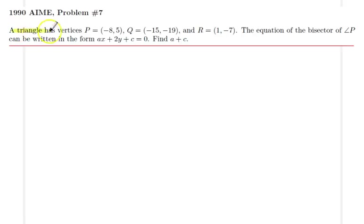We are given a triangle with vertices P, Q and R. The equation of the angle bisector of angle P can be written in the following form. We would like to find A plus C.